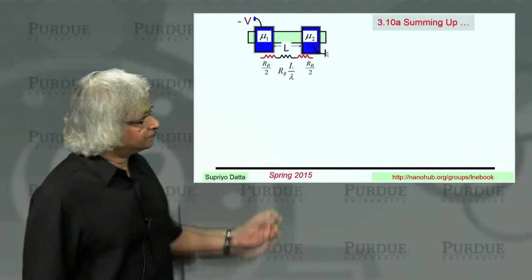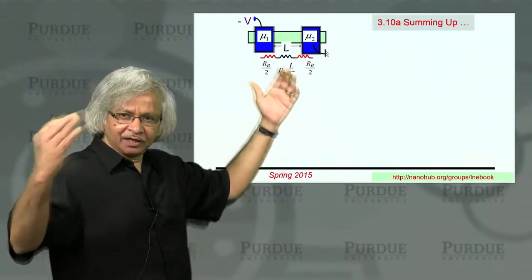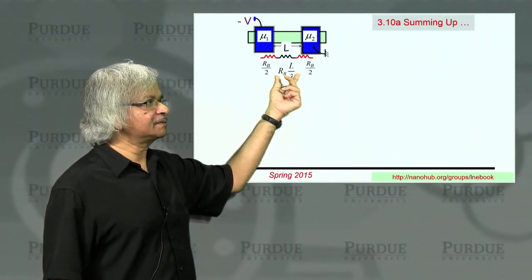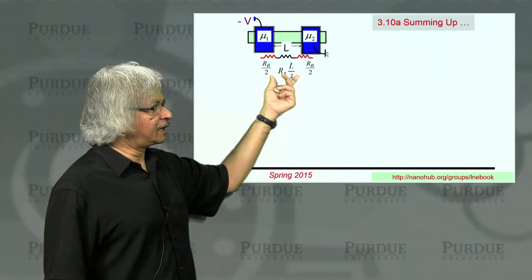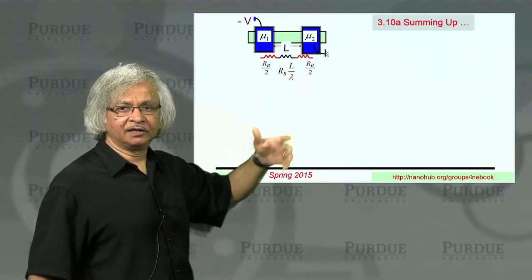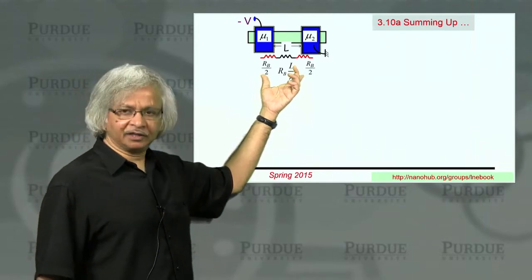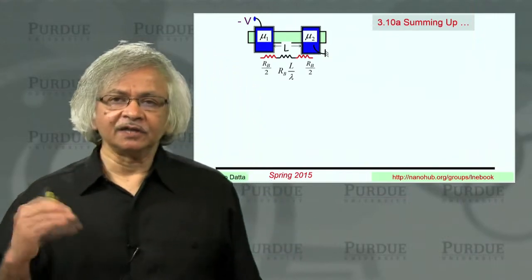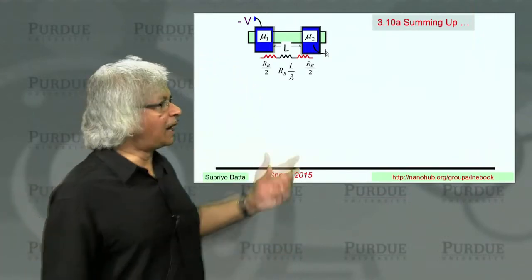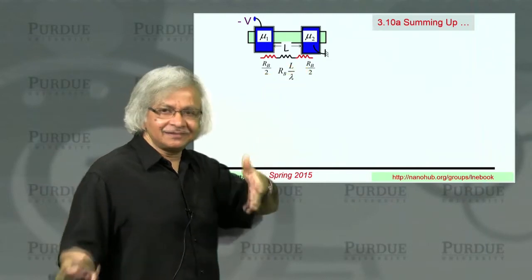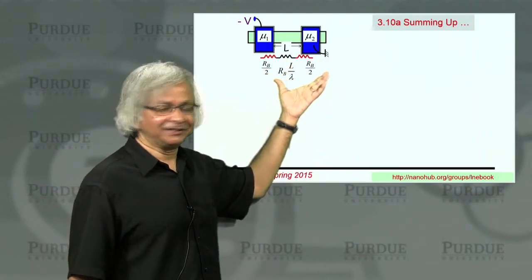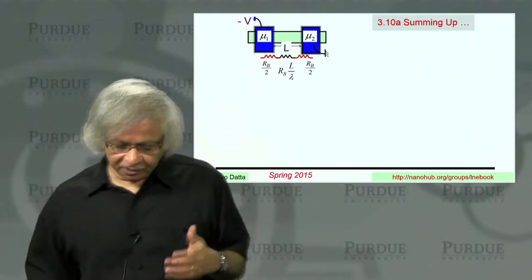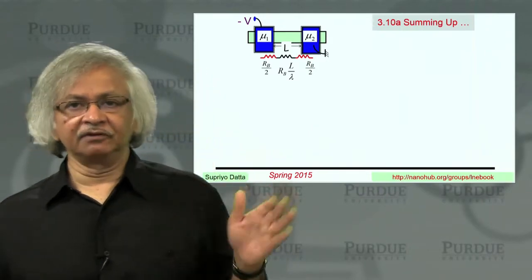As you may recall, we started from what we had done in the previous units, where we showed that the resistance has a part that's proportional to the length. And then there's this extra constant part, independent of the length, what you call the interface resistance. And what we tried to do in this unit is try to show why the interface resistance is associated with the interface, essentially. How do you know that it's actually at the interface and not somewhere else? And in the process, actually, we introduced a lot of very important and general concepts.